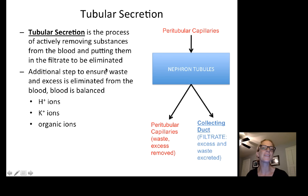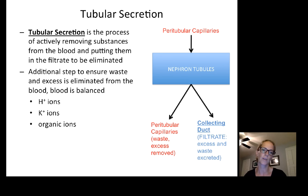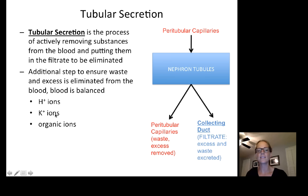We're almost there. A little bit on tubular secretion and then we'll be done. Tubular secretion is the process of taking anything that was in the blood that hasn't yet been eliminated. It's the last step to make sure we've gotten rid of everything out of the filtrate. Tubular secretion is an active use of channels to put substances into the filtrate that have not yet been eliminated from the blood. This is how acid-base is balanced by removing hydrogen ions, how potassium is balanced by secreting potassium ions, and how certain toxins and organic ions are removed through specific transporters.